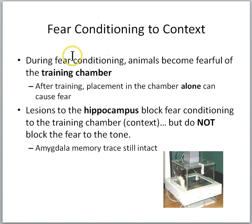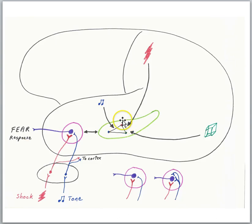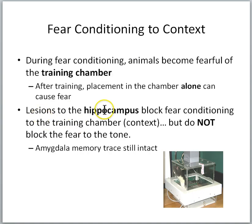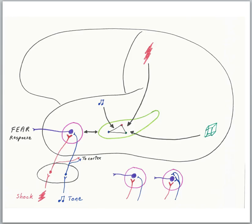During fear conditioning, animals become fearful of the training chamber, and after training, placement in the chamber alone can cause fear. This is because the hippocampus is communicating with the amygdala, telling it to generate a fear response to the context as well. Lesions to the hippocampus block fear conditioning to the training chamber but do not block the fear to the tone — the amygdala memory trace is still intact. So during one learning event, the brain is doing multiple kinds of processing: making an episodic memory in the hippocampal pathway, and making a specific memory trace of the association — that the tone predicts the shock.